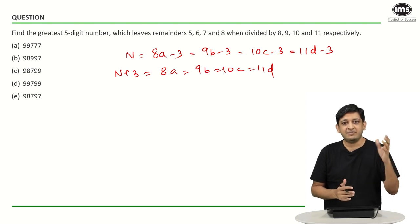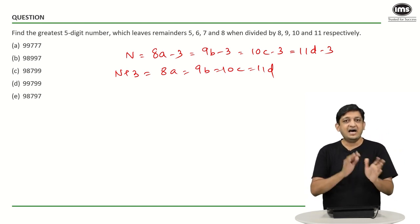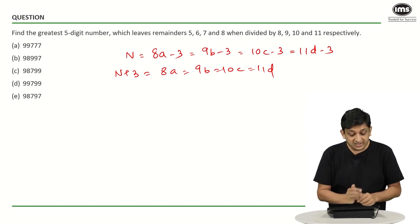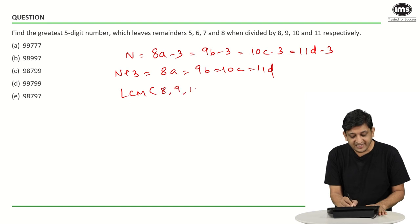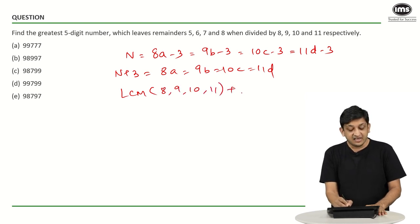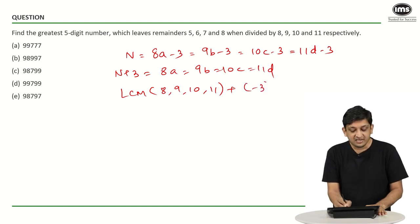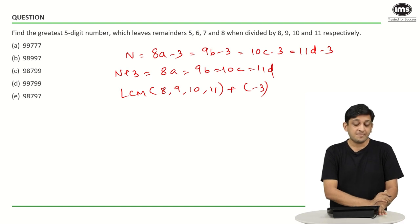The formula is: LCM of a, b, c, d plus r — where you are dividing one number by a, b, c, d and the remainder is r in each case. So in this context, we have to find the LCM of 8, 9, 10, and 11, and then add the remainder, which is minus 3.